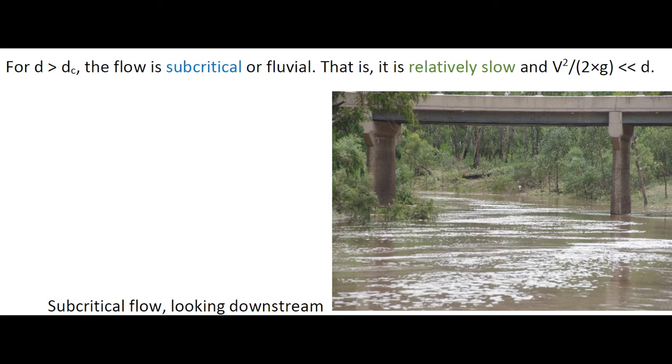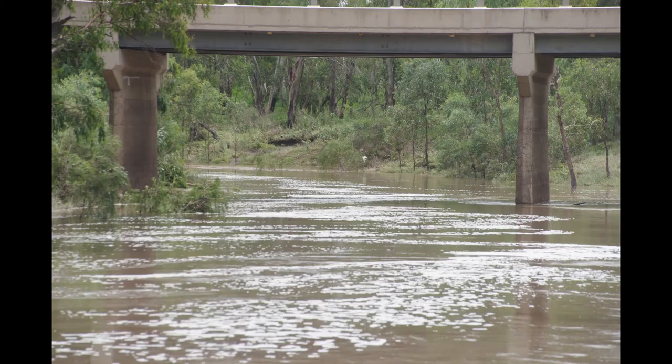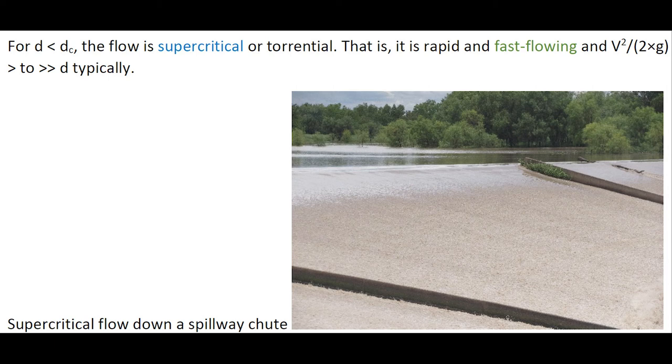When the water depth is greater than the critical flow depth, the flow is subcritical or fluvial. It is relatively slow, as illustrated on the following photograph.